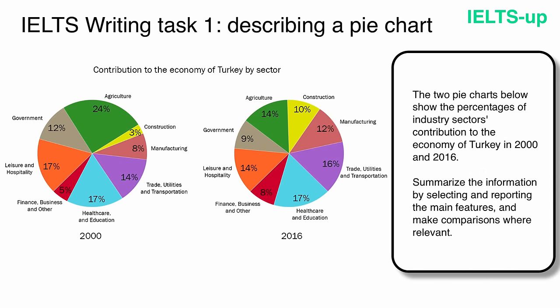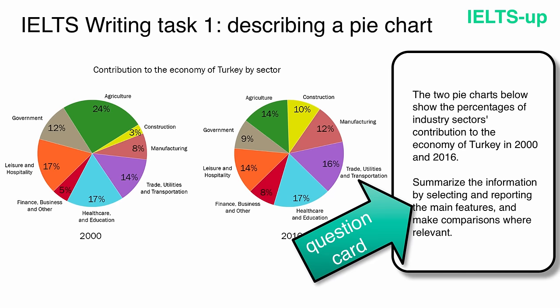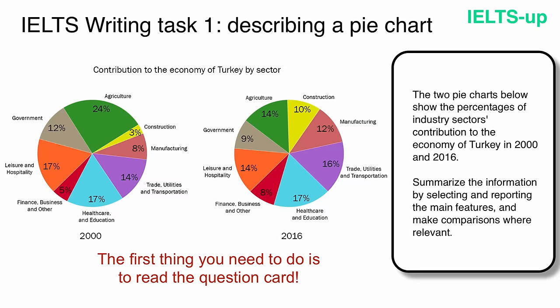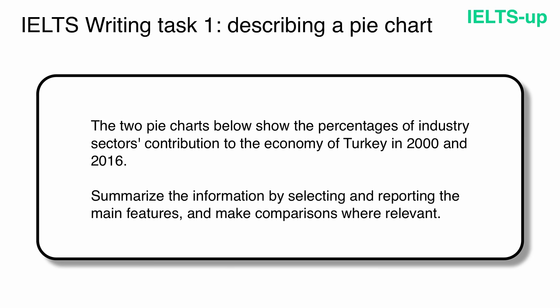This is an IELTS writing task 1 sample. You have a pie chart to describe and a question card with important information. The first thing you need to do is read the question card. The two charts below show the percentages of industry sectors' contribution to the economy of Turkey in 2000 and 2016. Summarize the information by selecting and reporting the main features and make comparisons where relevant.